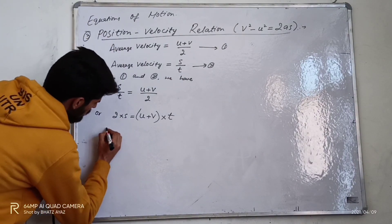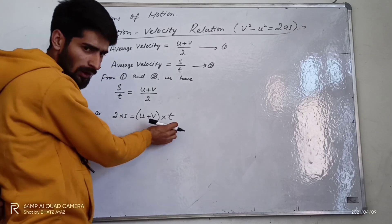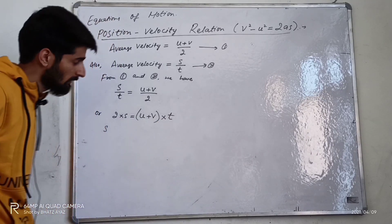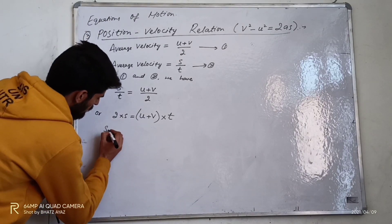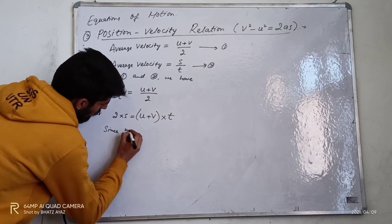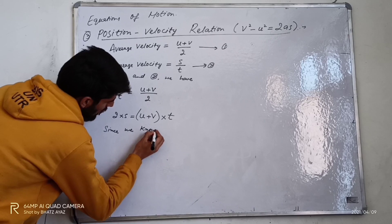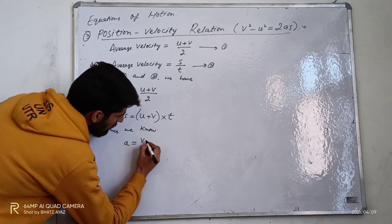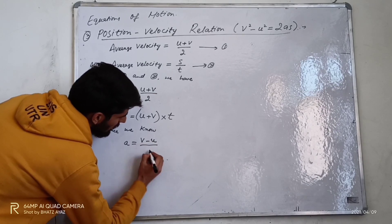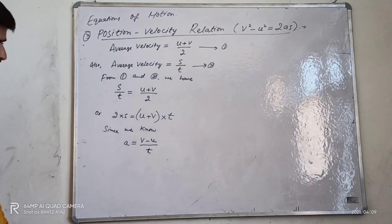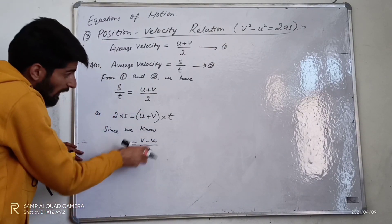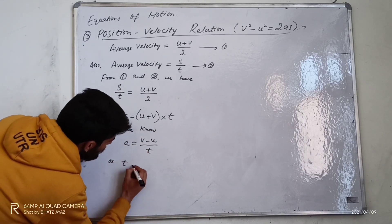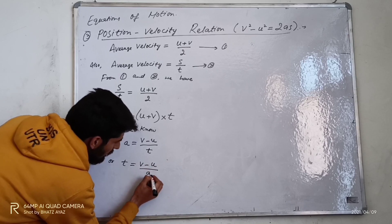Now I need to find the value of t. Since we know acceleration is equal to final velocity minus initial velocity divided by t, I can rearrange to write: t is equal to v minus u divided by a.